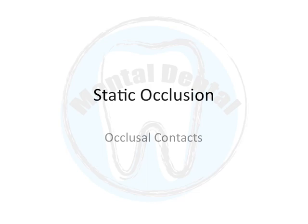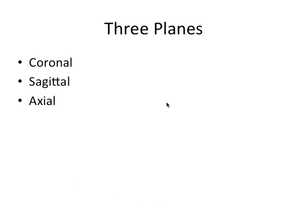Hey guys, it's Ryan. In this group of videos we're going to talk about static and dynamic occlusion. We're going to start with static occlusion — basically when the jaw is closed and not moving — and we'll focus on occlusal contacts. This is a tricky concept; the more you practice the better you're gonna get. The best thing you can do is use a denteform and manipulate it in your hands. I'm also going to show you some drawings and shortcuts that I think will really help out.